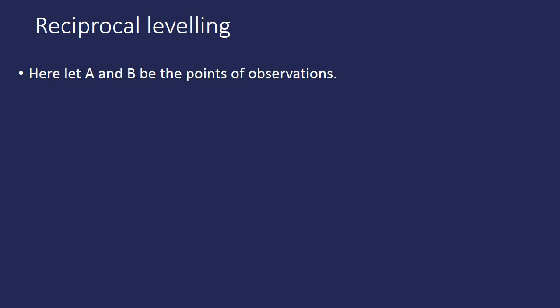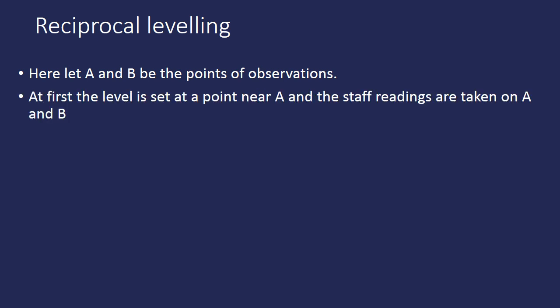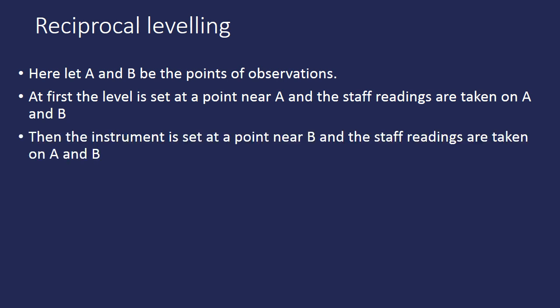Let A and B be the points of observation. Staff readings are to be taken at stations A and B. First, the level is set up at a point near A and staff readings are taken on both A and B. Then the instrument is set up at a point near B and the staff readings are taken on both A and B again.